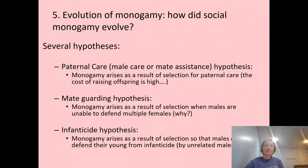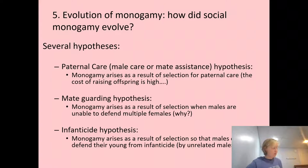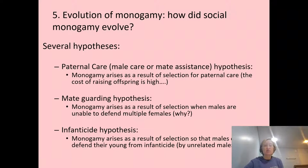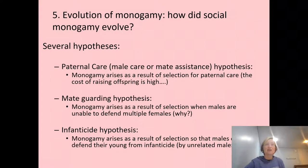How did monogamy evolve, especially given that males typically don't benefit from it? Researchers have proposed three hypotheses. The first is the paternal care hypothesis: monogamy arises when there's selection for paternal care — resources are scarce, the cost of raising offspring is high, or another adult is needed to protect young from threats, making mate assistance the best choice for both sexes.